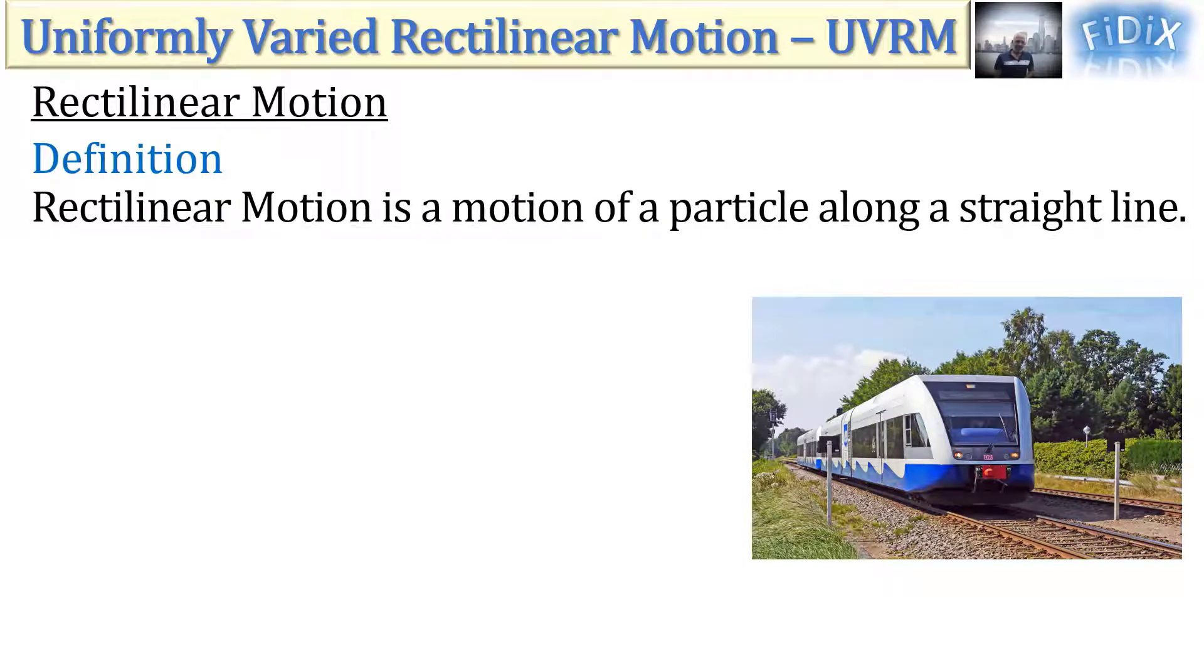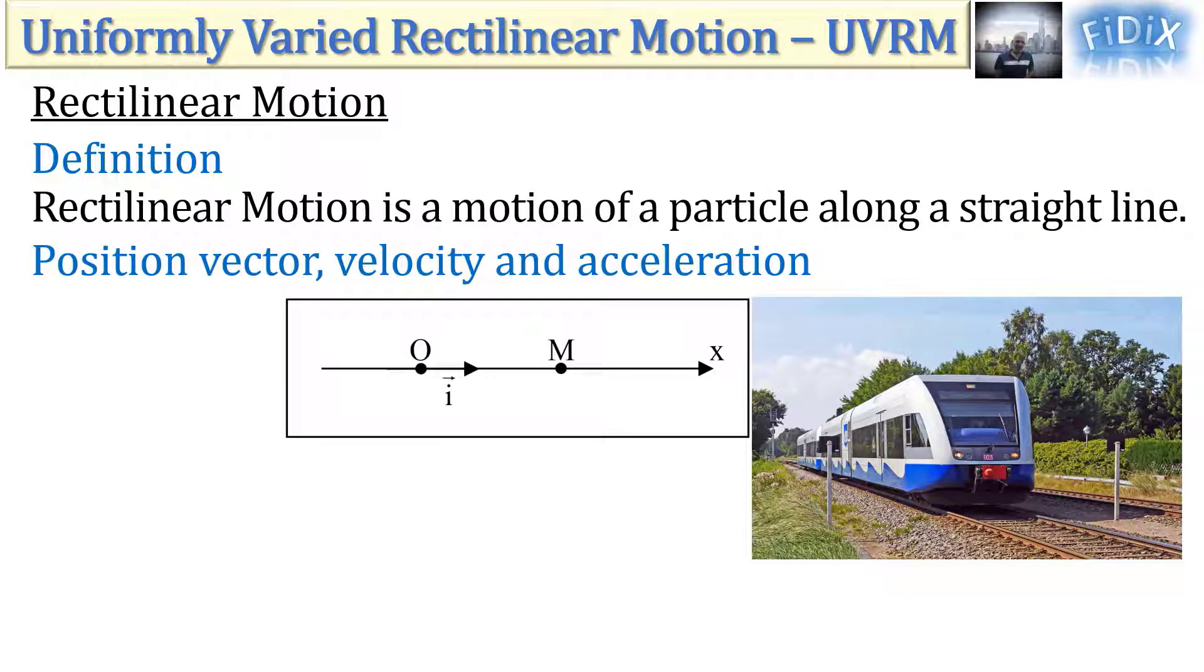Rectilinear motion is a motion of a particle along a straight line. It can therefore be described mathematically using only one spatial dimension to determine the position vector, the velocity, and the acceleration vector.